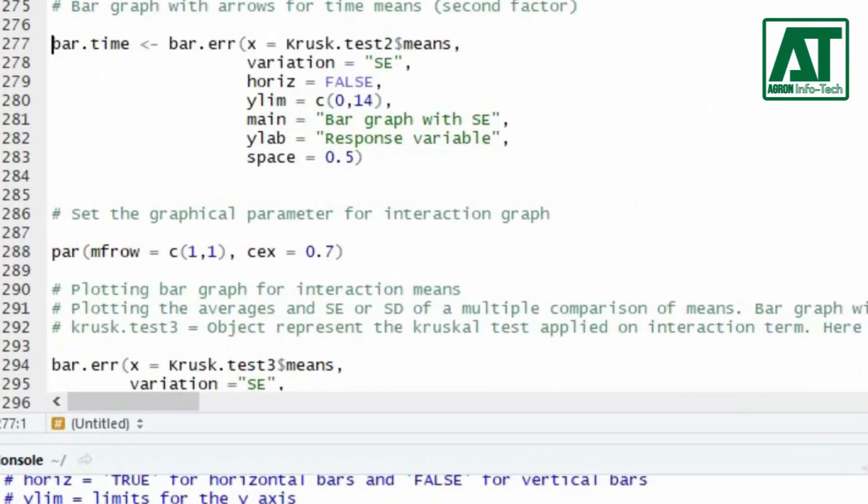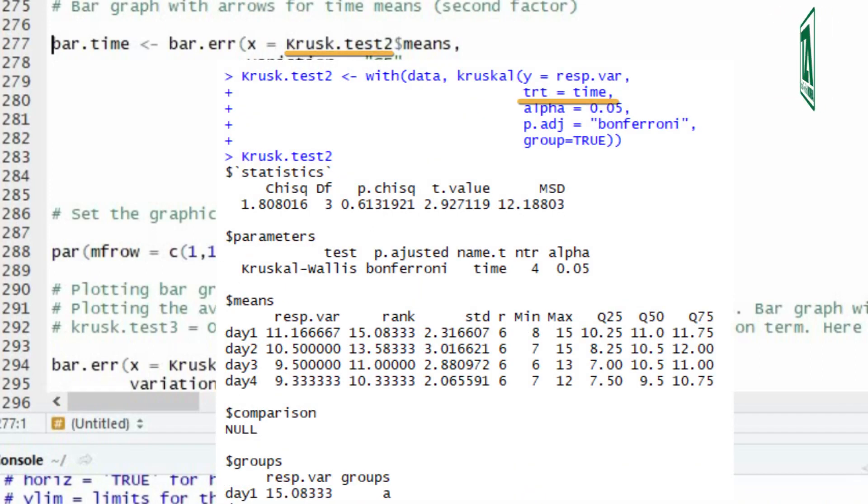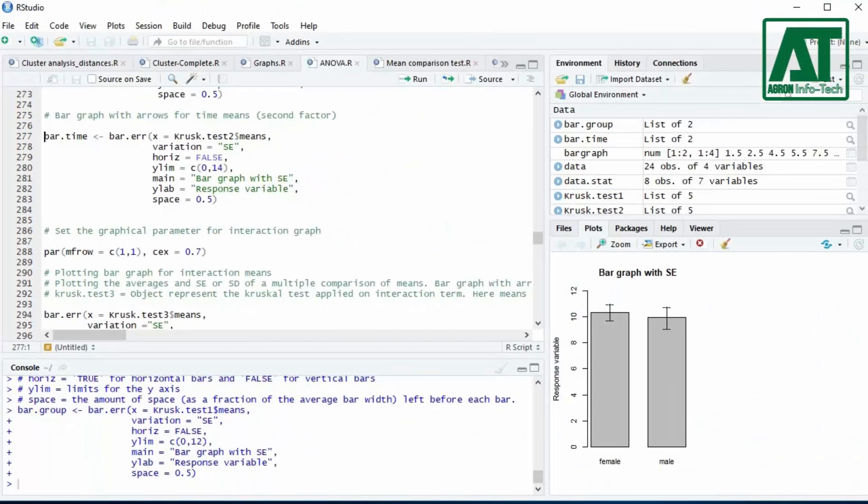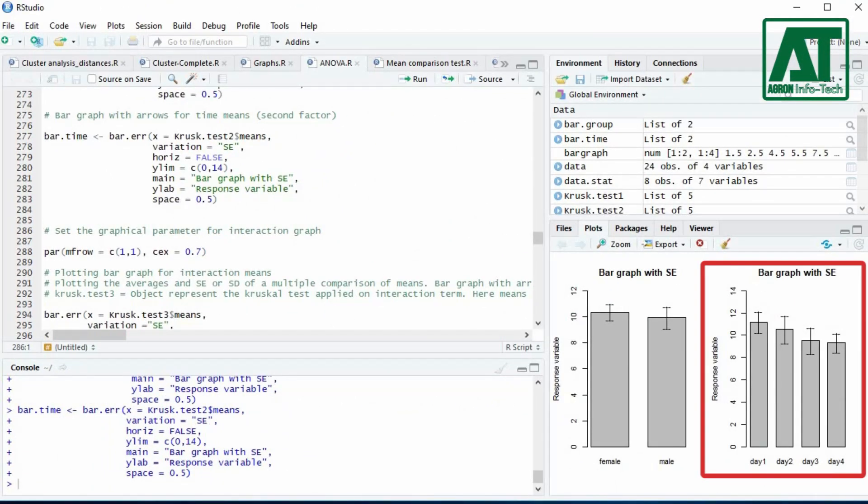The same function will be used to plot bar graph for the second factor. Here you need to specify the comparisons of means component from the Kruskal-Wallis test applied on time factor. This will plot a bar graph with standard error bars for time factor.